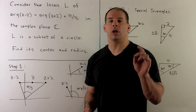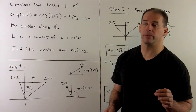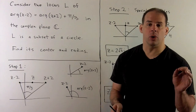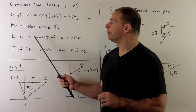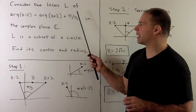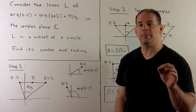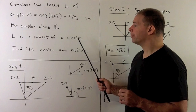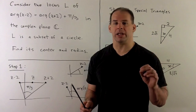Here's another problem on loci of equations in the complex plane. We want to consider the locus L of the equation: argument of z minus 2 equals argument of z plus 2 plus pi thirds, in the complex plane. We're given that L is a subset of a circle. The problem is to find its center and its radius.